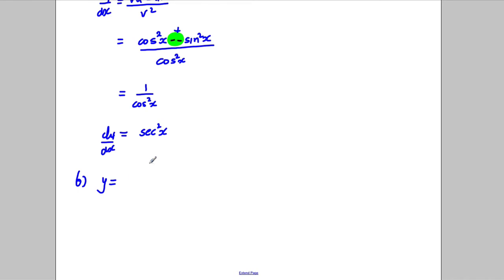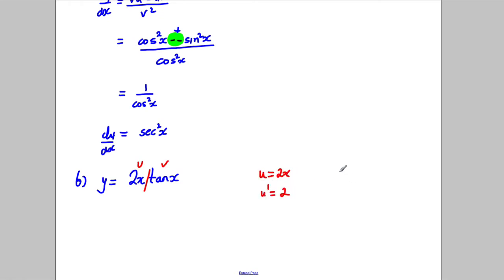Our curve for part B is y equals 2x tan x. You should spot straight away that this is a product, so u equals 2x, u dash equals 2, v equals tan x, and v dash equals sec squared x.